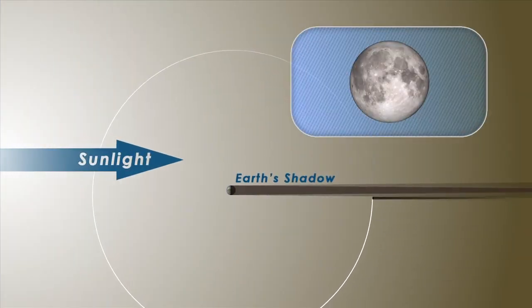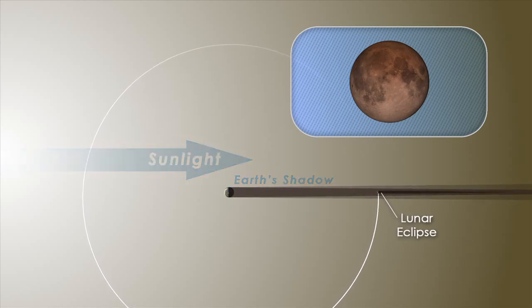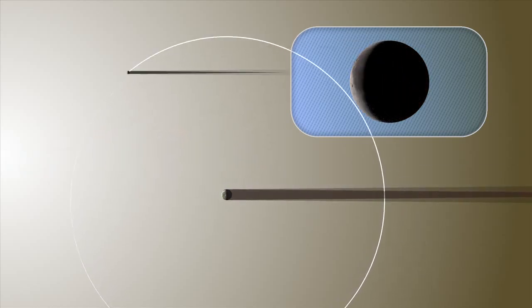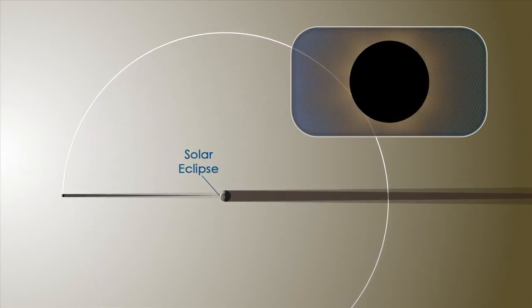A lunar eclipse occurs when the moon passes through the Earth's shadow, just as a solar eclipse occurs when part of the Earth passes through the moon's shadow.